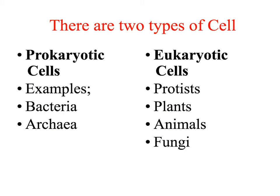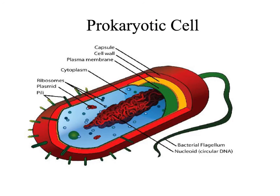Examples of prokaryotic cells are bacteria and archaea — these two kingdoms contain prokaryotic organisms. Eukaryotic cells are found in the Protista, Plantae, Animalia, and Fungi kingdoms. This is the structure of a prokaryotic cell.